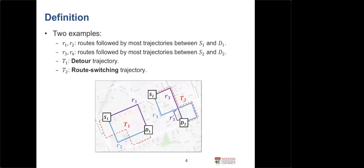We show two examples. In the first, R1 and R2 are normal routes frequently traveled between S1 and D1. T1 is anomalous because it does not follow R1 or R2. In the second example, R3 and R4 are normal routes between S2 and D2. T2 is anomalous — even though segments of T2 lie on R3 and R4, it does not follow either completely, indicating an unusual event on R3. We name these cases detour anomaly and route switching anomaly.